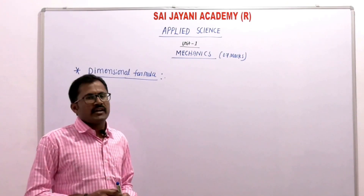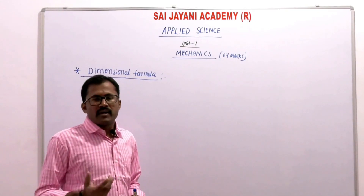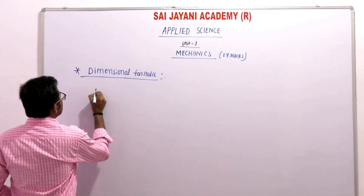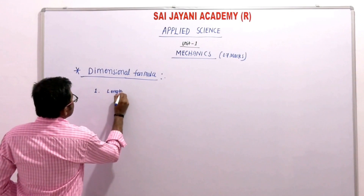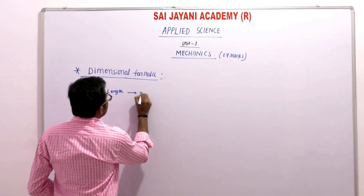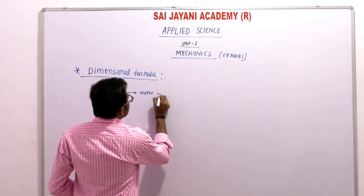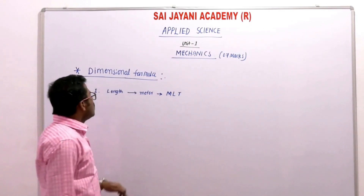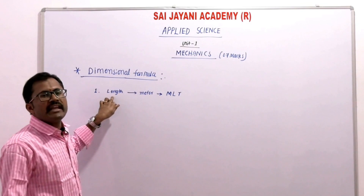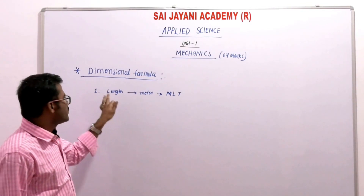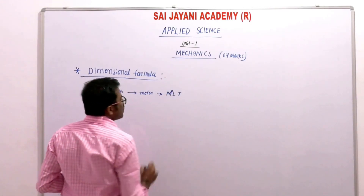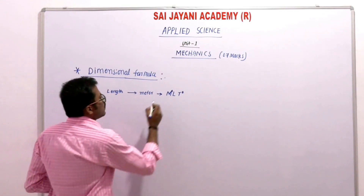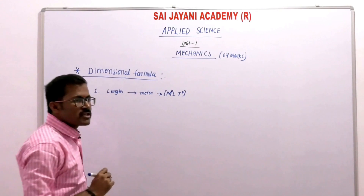Any physical quantity expressed in terms of the three fundamental quantities — mass (M), length (L), and time (T) — gives its dimensional formula. For length: the SI unit is meter. In the dimensional formula, length is expressed as L. There is no mass and no time involved in length. So the dimensional formula for length is M⁰ L T⁰.